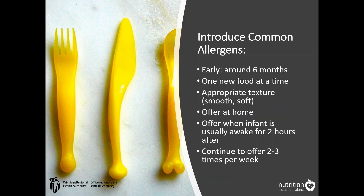Here are some tips for introducing common allergens around 6 months. Start with one allergen at a time in the appropriate texture — soft and not a choking hazard. Wait about two days before offering the next allergen. Feed at home when your baby is well and when they are typically awake for two hours after, so that you can monitor for a reaction. A reaction can happen within minutes but up to two hours after eating a food. If your baby does not have a reaction, continue to offer twice per week to maintain tolerance.